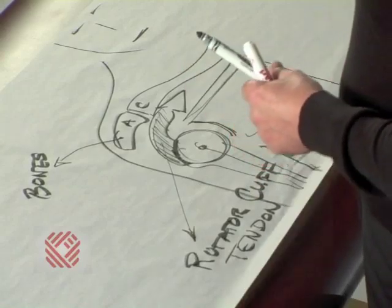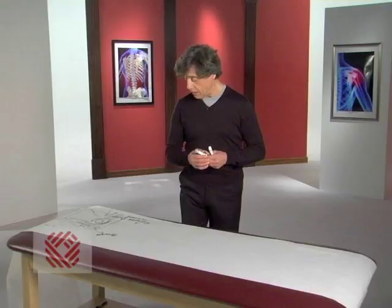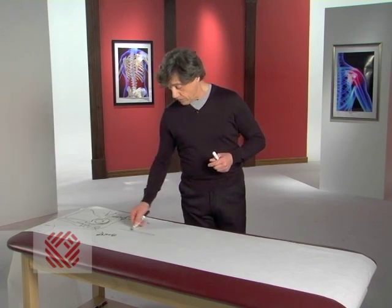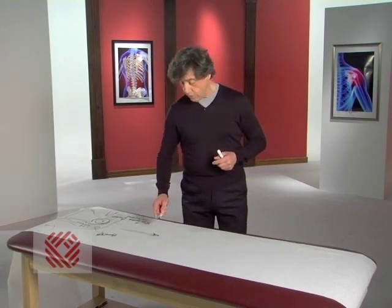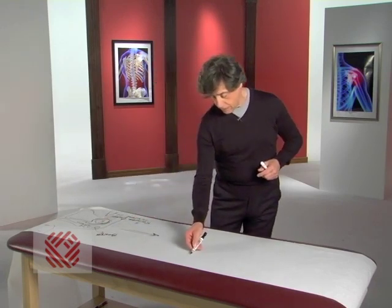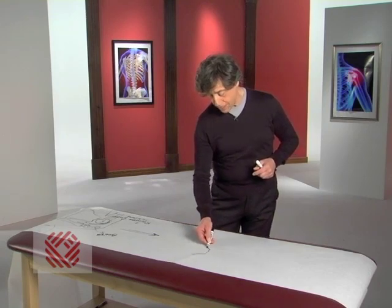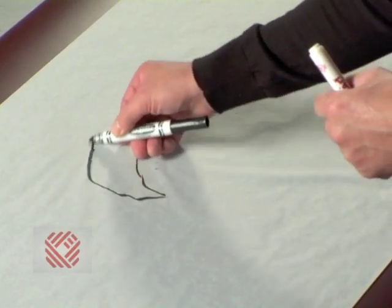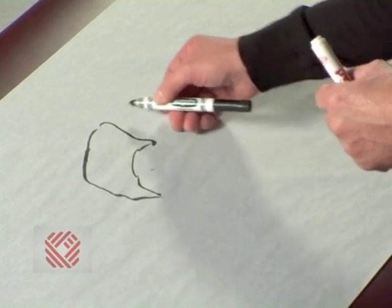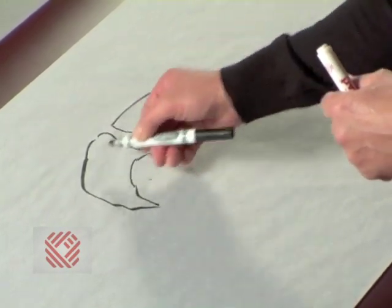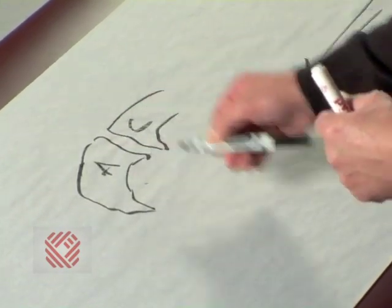Now, what happens with a tear is the following. First of all, we find that bone A usually develops a rather significant spur, like this. And bone C will also have some spurs. So this is A. This is C.